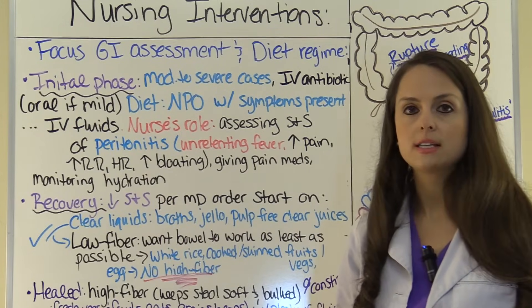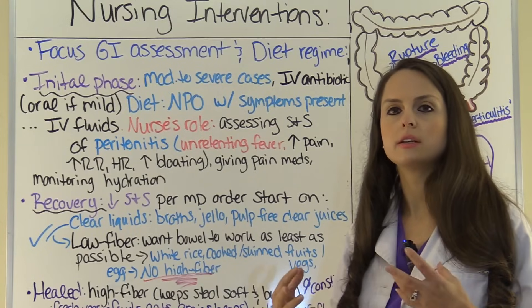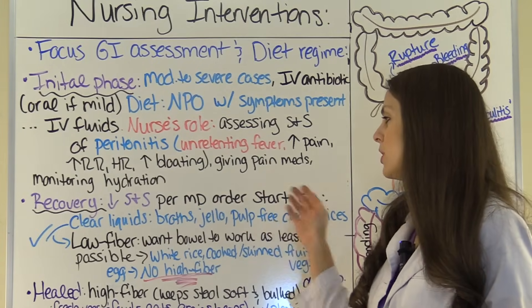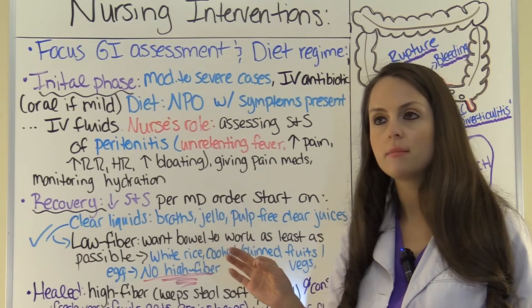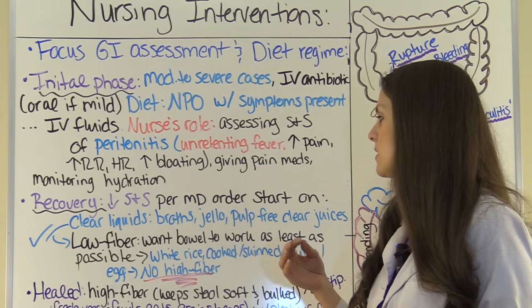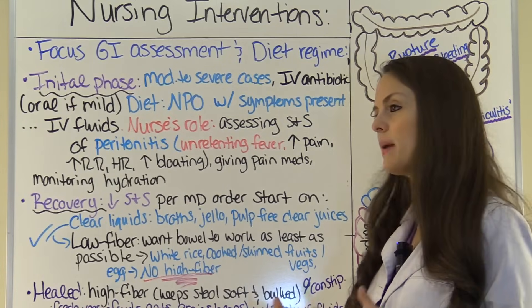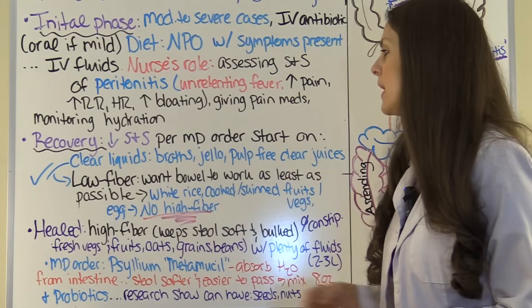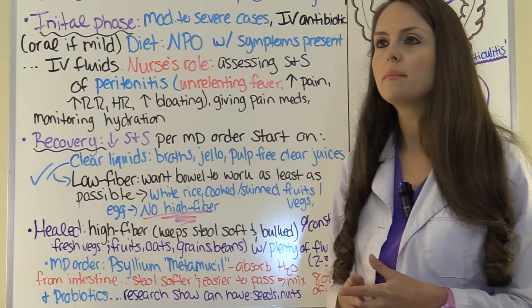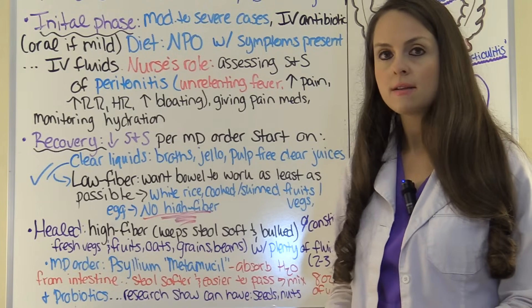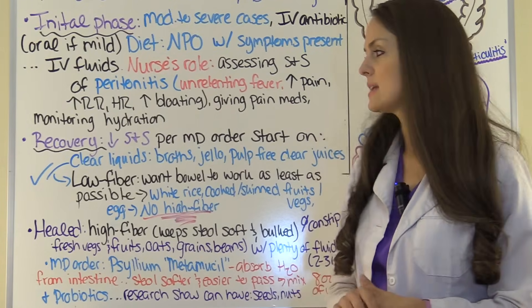You'll be giving pain medications and monitoring hydration status. During the recovery phase, as signs and symptoms start to go away and the patient is getting a little bit better, per the physician's order you'll probably be ordered to start them on a clear liquid diet. The rule of thumb is anything you can see through, as long as it doesn't have pulp — so broth, jello, and pulp-free clear juices like apple juice. If the patient tolerates that, the next day you'd probably start them on a low fiber, low residue diet. This is the only time a patient with diverticulosis will need to consume low fiber — because they're inflamed and sick, the gut needs to rest and needs foods that require the least effort to digest.